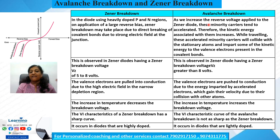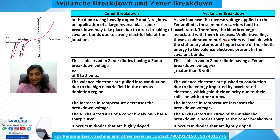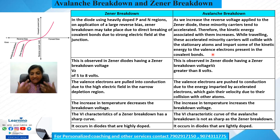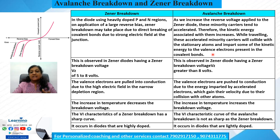In avalanche breakdown, as we increase the reverse voltage applied to a Zener diode, the minority carriers are accelerated and their kinetic energy increases. While traveling, these accelerated minority carriers collide with stationary atoms and impart some of their kinetic energy to the valence electrons. This collision cascade produces an avalanche of electrons — this is the process of avalanche breakdown.